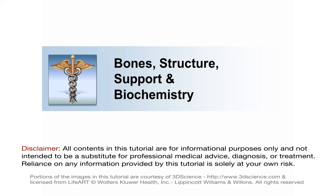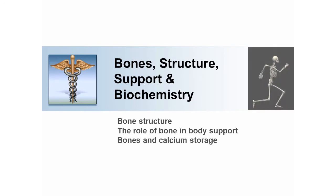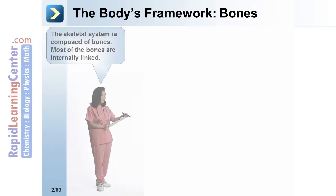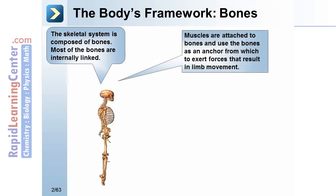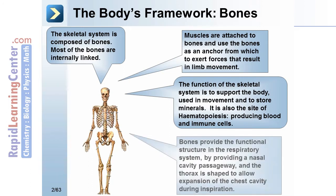In this segment of the tutorial we'll talk about bone structure, the role of bone in body support, and bones as a calcium storage site. The skeletal system is composed of bones. Most bones are internally linked; muscles are attached to bones and use the bones as an anchor from which to exert forces that result in limb movement. The function of the skeletal system is to support the body, aid in movement, store minerals, and is also the site of hematopoiesis, producing blood and immune cells. Bones also provide functional structure in the respiratory system, providing a nasal cavity passageway, and the thorax is shaped to allow expansion of the chest cavity during inspiration.